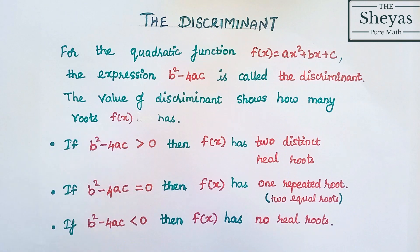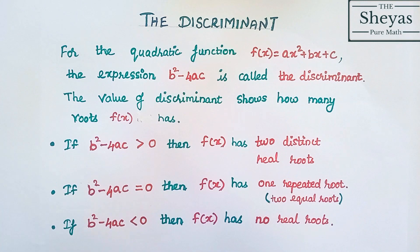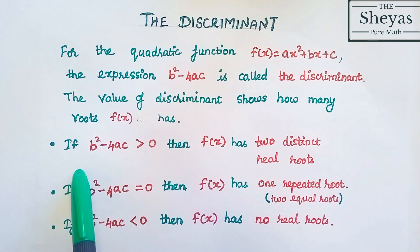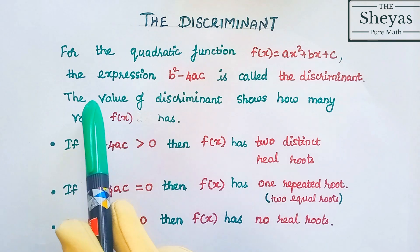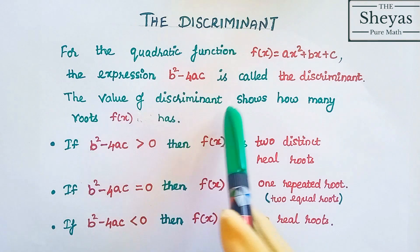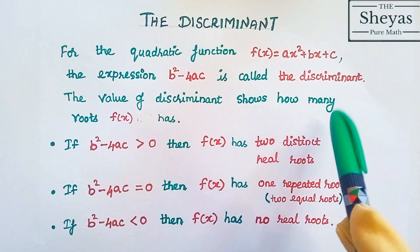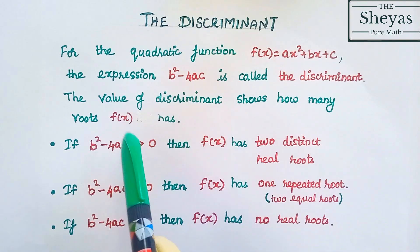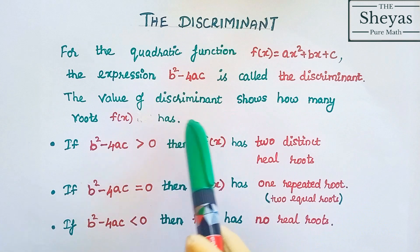Based on this discriminant, we can decide the nature of the roots. The value of the discriminant shows how many roots f of x has.